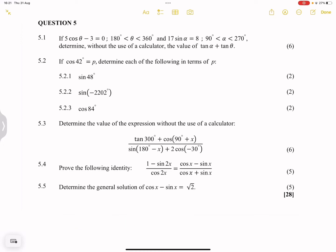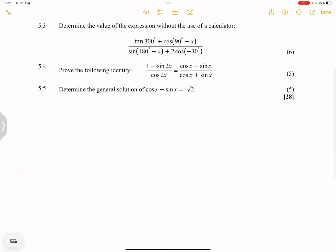Good day, everyone, and once again we're back. I'm going to actually start with 5.3. In this case, we're trying to simplify trig expressions. 5.3 says determine the value of the expression without the use of a calculator. So what they've given us is tan 300 plus cos(90 + X) divided by sin(180 - X).